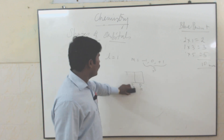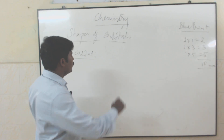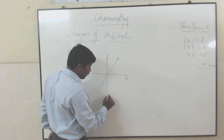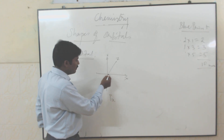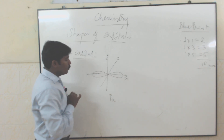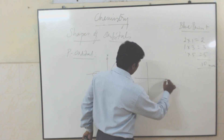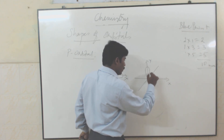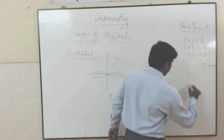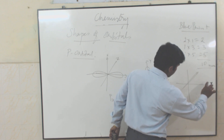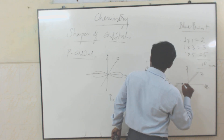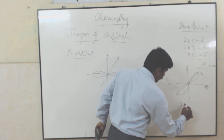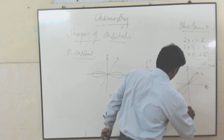I am going to draw the structure of px, py, and pz. This is the x axis, this is the y axis, this is the z axis. For 2px, the dumbbell shape is along the x axis. For 2py, the dumbbell shape is along the y axis. For 2pz, the dumbbell shape is along the z axis. These are the 3 orientations: 2px, 2py, 2pz.